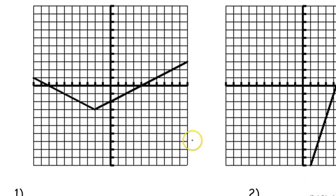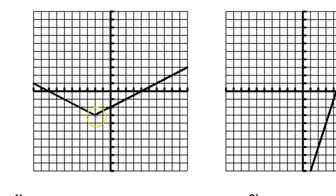When we look at this absolute value function, we see that it has two branches to it. When I look at this branch over here on the left, I can imagine what if it extended beyond this. The slope seems to be going in a consistent direction.